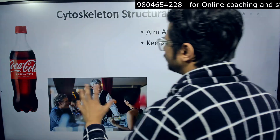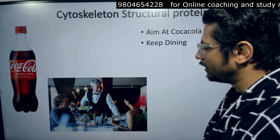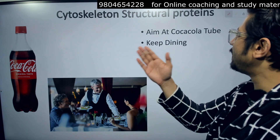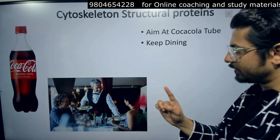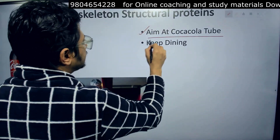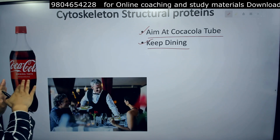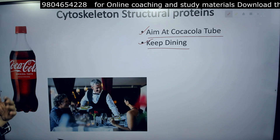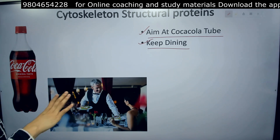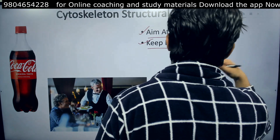There are two images you need to print in your head: one is a Coca-Cola bottle, and the other is a dining experience. The first sentence is 'Aim at Coca-Cola tube,' and the second is 'Keep dining.' These are the two sentences you need to remember — aim at Coca-Cola tube, and keep dining.